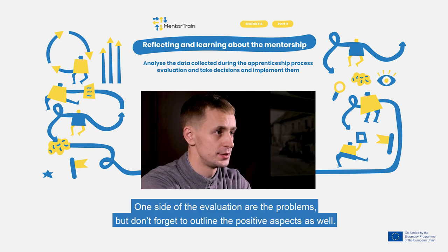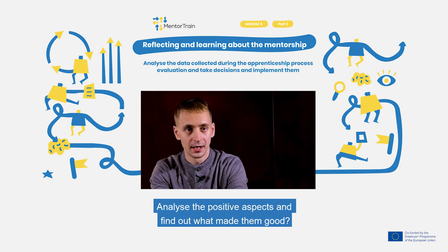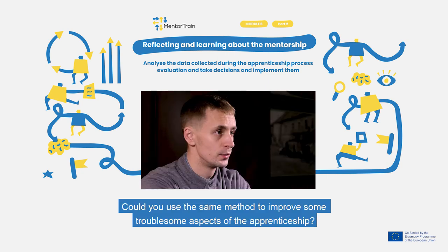One side of the evaluation covers the problems, but don't forget to outline the positive aspects as well. If something went well, it must be appreciated and recorded so it can be repeated next time. Analyze the positive aspects and find out what made them good. Could you use the same method to improve some troublesome aspects of your apprenticeship?